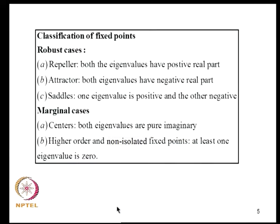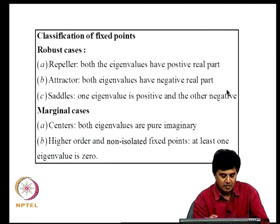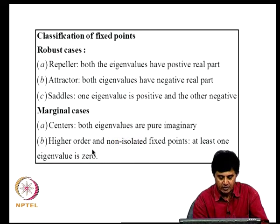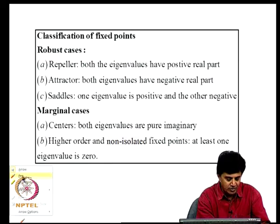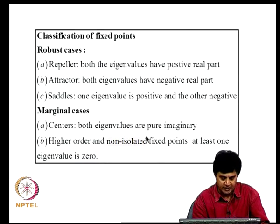There is another way of looking at fixed points. We consider two possibilities: robust cases include repellers (both eigenvalues have positive real part) and attractors (both eigenvalues have negative real part); saddles have one positive and one negative eigenvalue. Marginal cases occur when both eigenvalues are pure imaginary. There are also higher-order and non-isolated fixed points where at least one eigenvalue is zero. We will later see how these ideas relate to structural stability.